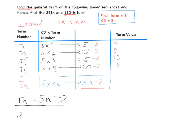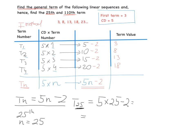Now we need to find the 25th term. Instead of N we write 25. So T25 = 5 × N − 2. N is 25, so T25 = 5 × 25 − 2 = 125 − 2 = 123. And this is our 25th term.